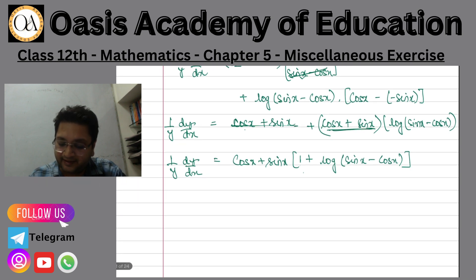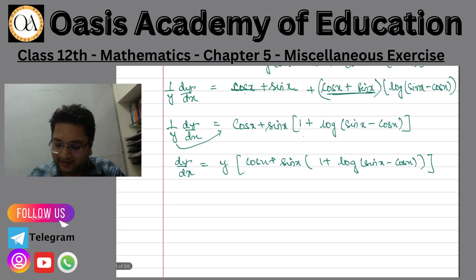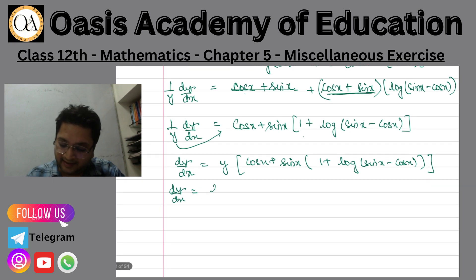We are going to take this y out here. So dy by dx would be y into cos x plus sin x into 1 plus log sine x minus cos x. Which would be y into sine x minus cos x into cos x plus sin x, this is common, 1 plus log sine x minus cos x.